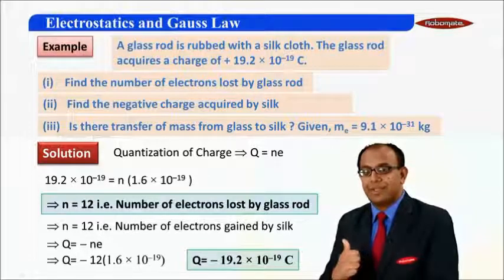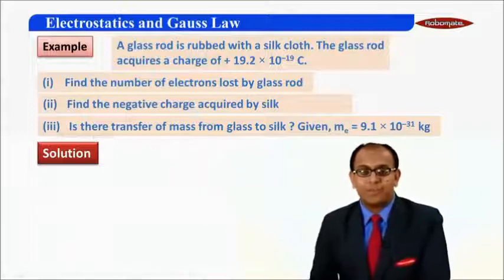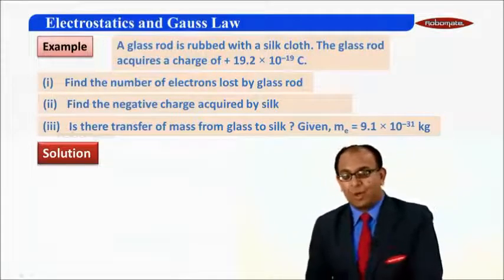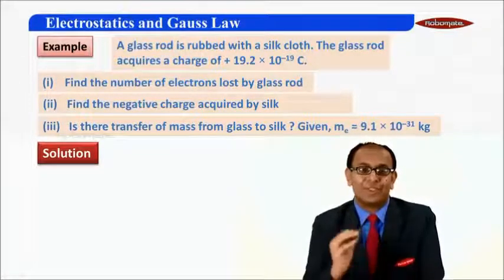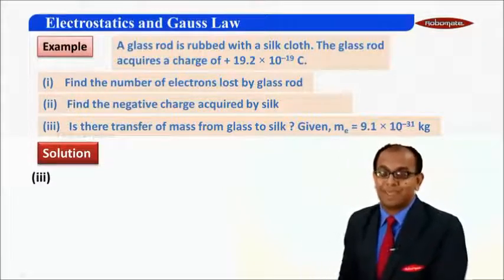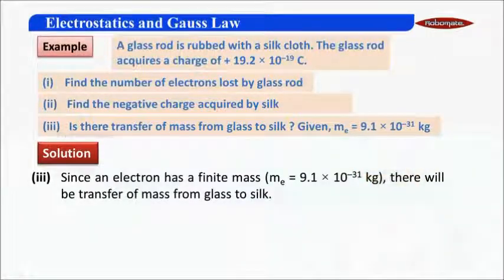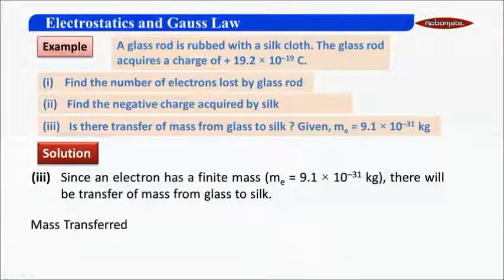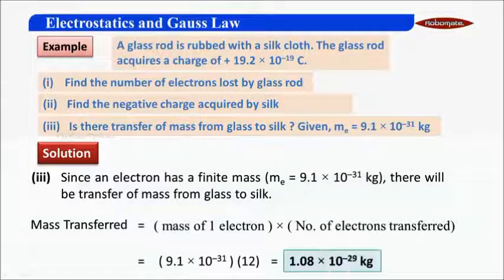We know the charge on silk and the charge on glass. Now let us find whether there will be a transfer of mass. When charging takes place it is due to transfer of electrons, which involves transfer of some finite mass because electrons have some finite mass. Hence, yes, there is some mass transfer. How much mass transfer will take place? That can be given by the mass of one electron multiplied by the number of electrons transferred, which comes out to be 1.08 × 10⁻²⁹ kg.